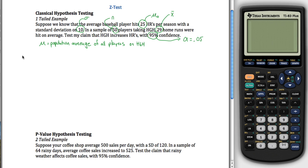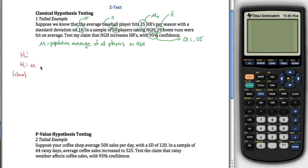On these problems, you always first state your null and alternative hypothesis. For the null hypothesis we use H0, and the alternative hypothesis is H1. Your alternative hypothesis is what your claim is, so it's sometimes easier to start there. In this case, we claim HGH increases home runs, so we write that mu — the population average of all players on HGH — is greater than mu naught, or in other words, mu is greater than 25.